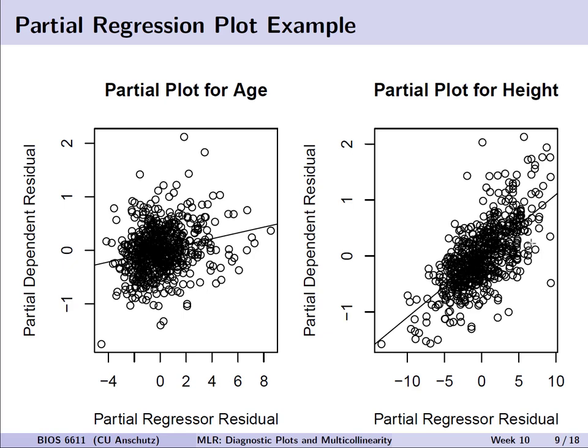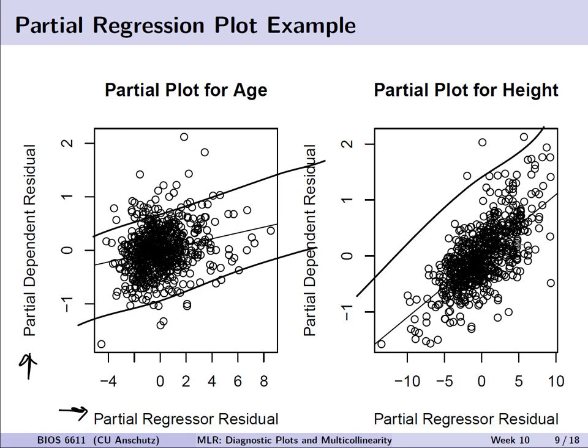Looking at the resulting partial plots, we can see the relationship between the residuals for our predictor of interest and the dependent residual of Y. For both partial plots, there does appear to be a linear relationship — maybe a bit stronger for height than age — and we can also see a decent spread of points, with a few that may be atypical outside the boundaries.